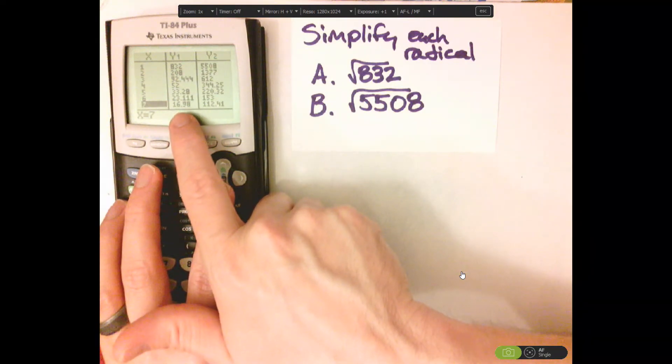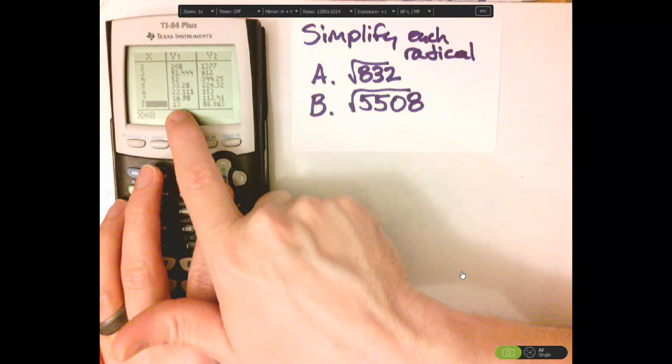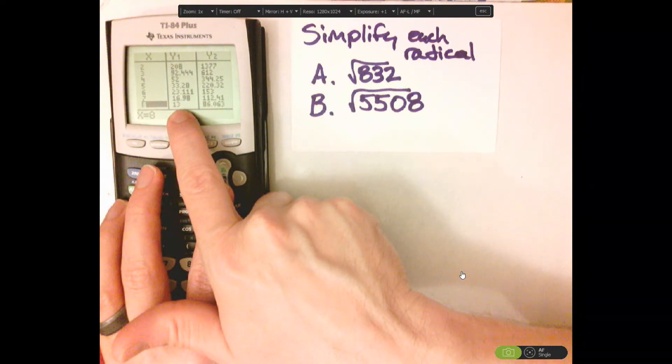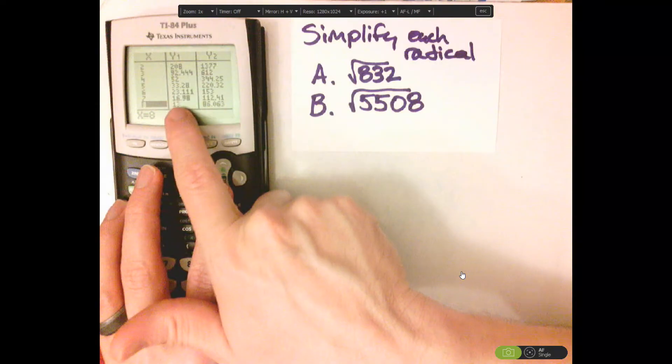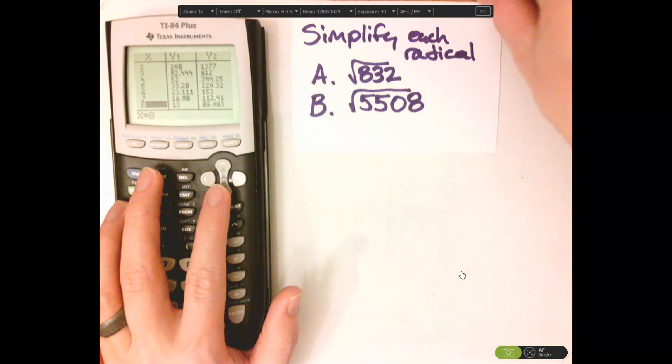We'll take these one at a time. But notice there's nothing more that can go into - there's no square that can go into this number right here.